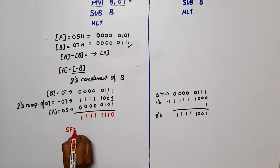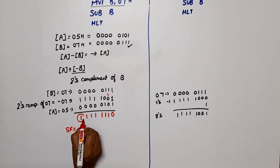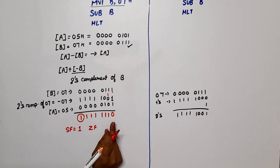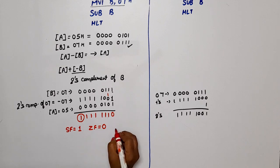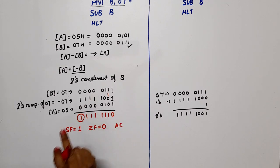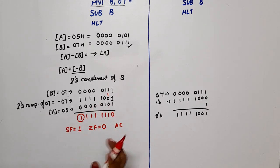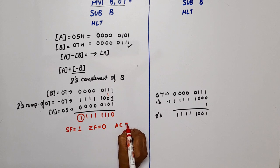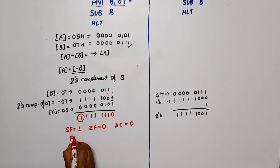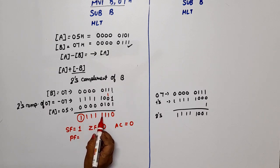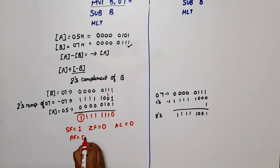Now let's write the flags. The sign flag SF equals the MSB, which is 1. The zero flag ZF is 0 because not all bits are zero — many bits are 1. The auxiliary carry AC is 0 because there was no carry transfer from the lower nibble to the upper nibble. For the parity flag, counting the number of 1s: there are 7 ones, which is odd, so PF is 0.